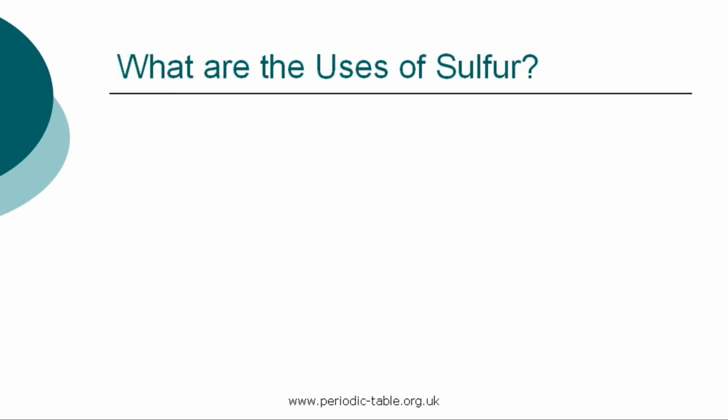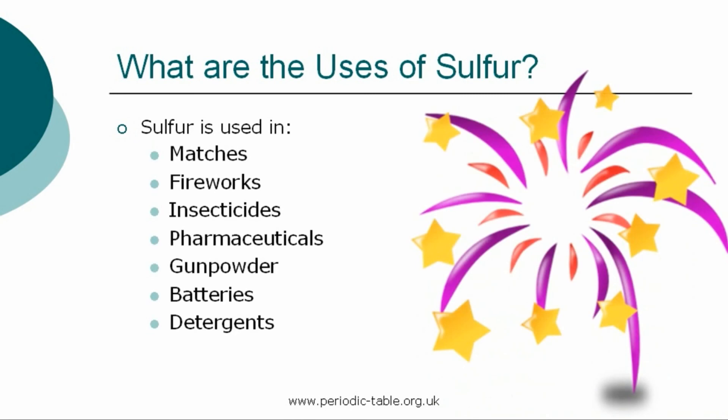Once the properties of an element have been established, we then have the ability to identify how it can be used. Sulfur is used in the manufacture of matches, fireworks, insecticides, pharmaceuticals, gunpowder, batteries, and detergents.